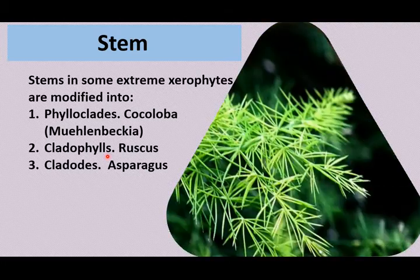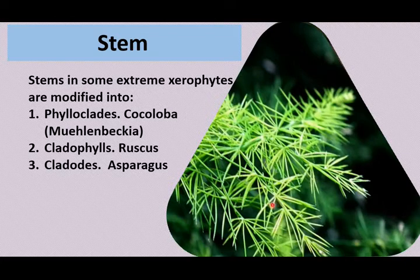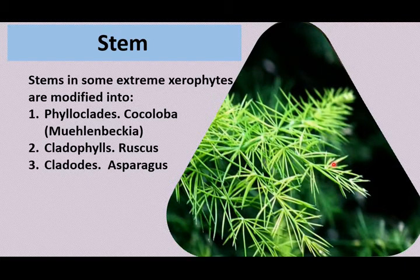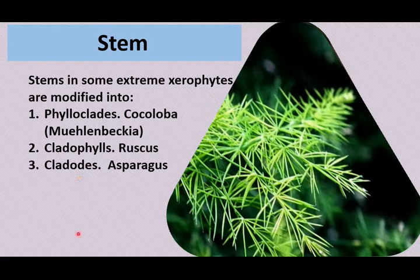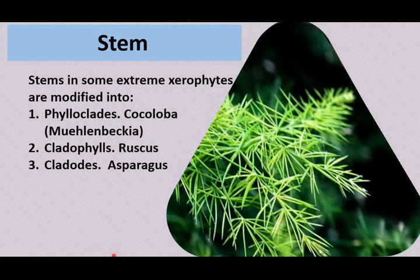In the Asparagus plant, the stem consists of a single internode, becomes green, and performs photosynthesis. A phylloclade contains many nodes and internodes, whereas this structure — a cladode — consists of a single internode. The fine pointed green structures seen in Asparagus are all stems of a single internode, called cladodes.